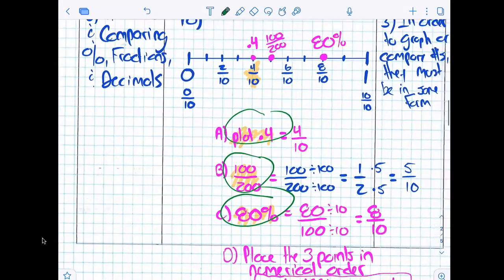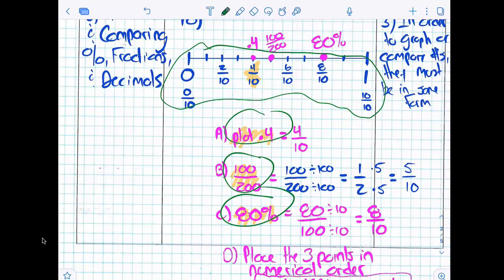Notice the number line up here that we need to plot them on is in what form? Fraction! So in order to plot a decimal on a fraction number line, we needed to convert the decimal into a fraction!